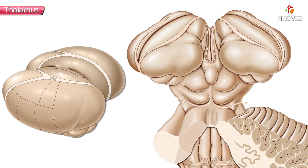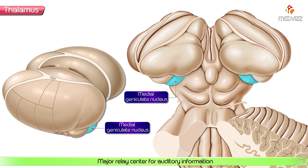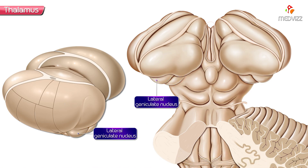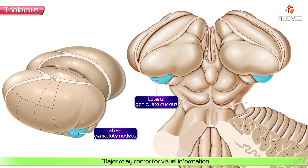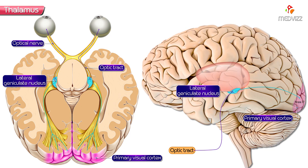The metathalamus consists of the medial geniculate nucleus, which is the major relay center for auditory information, and the lateral geniculate nucleus, which is the major relay center for visual information. The lateral geniculate nucleus receives input from the optic tract and projects into the primary visual cortex — Brodmann area 17.